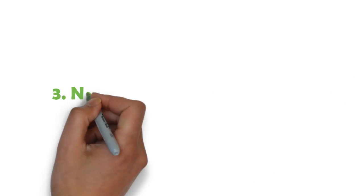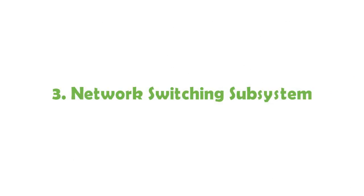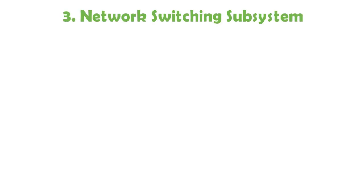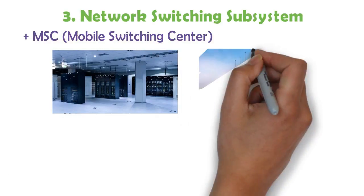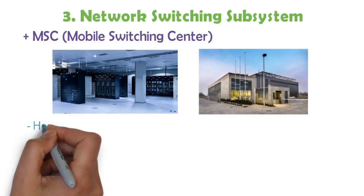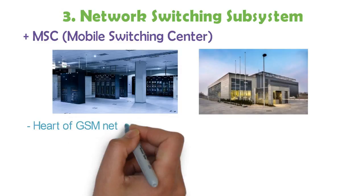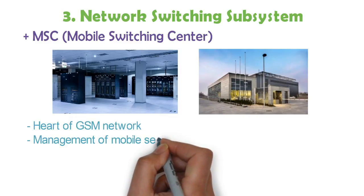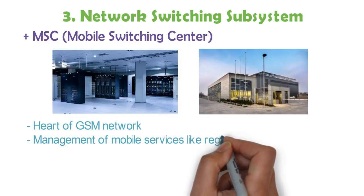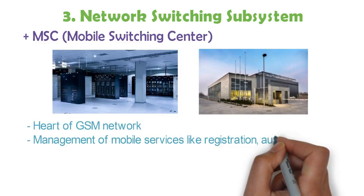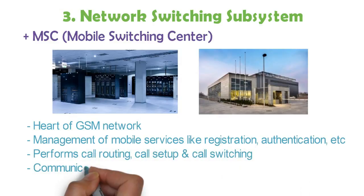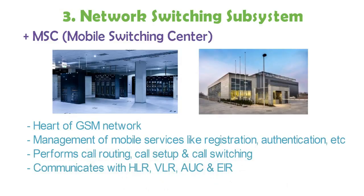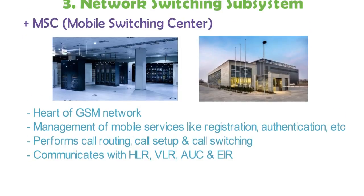The third subsystem is the Network Switching Subsystem, which has five components. The main element is the Mobile Switching Center (MSC) — it is the heart of GSM. It manages mobile services like registration and authentication, and performs call routing, call setup, and call switching. It communicates with other NSS components like HLR, VLR, etc.